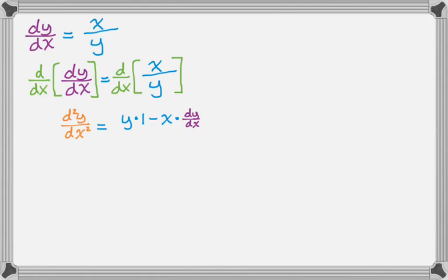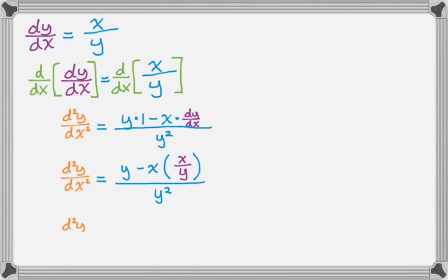So I did bottom derivative of the top minus top derivative of the bottom, now all over the bottom squared. And my next step is, I'm going to actually substitute in for that dy dx there. So I get y minus x times, and dy dx is x over y, and then all over the bottom squared.